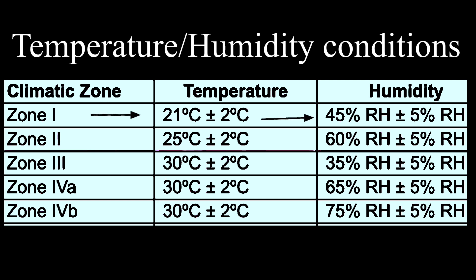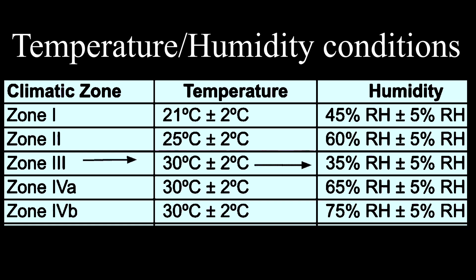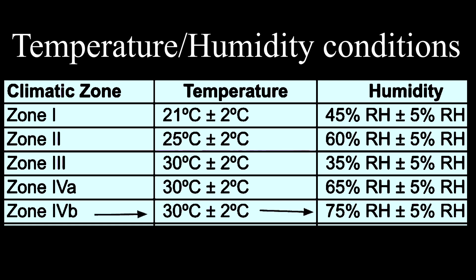For zone 1, temperature will be 21°C and humidity will be 45%. For zone 2, temperature will be 25°C and humidity will be 60%. For zone 3, temperature will be 30°C and humidity will be very low at 35%. For zone 4A, temperature will be 30°C and humidity will be 65%. For zone 4B, temperature will be 30°C and humidity will be very high at approximately 75%.